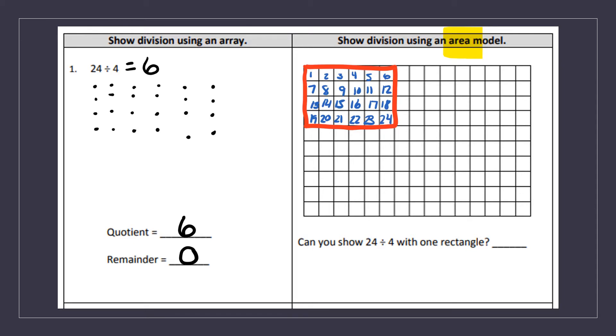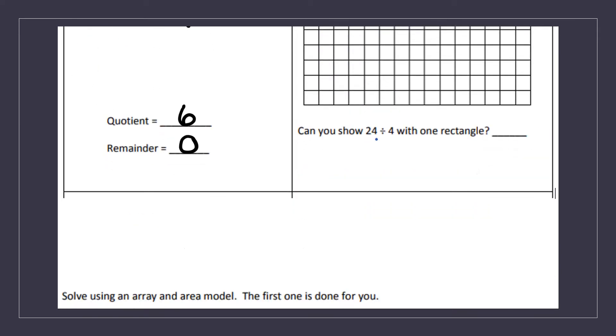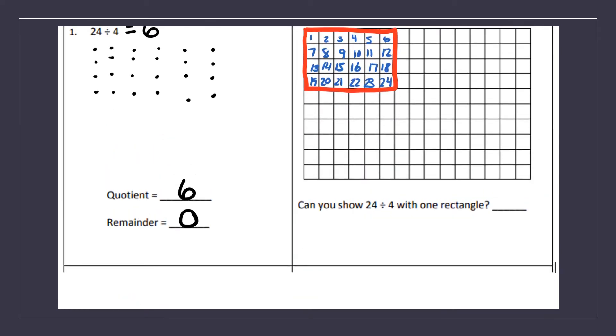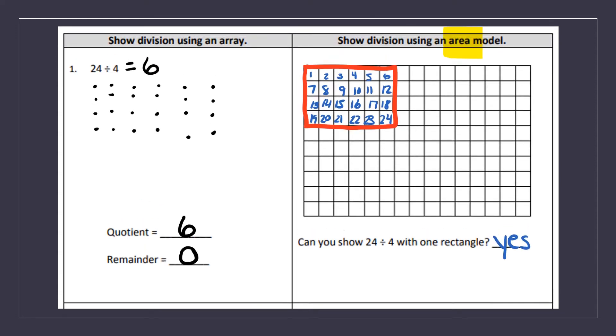So you of course don't need to write the numbers inside the boxes, but I wanted you to see that the inside of this rectangle, the area is 24. So can you show 24 divided by 4 with one rectangle? Yes, there was no remainders.